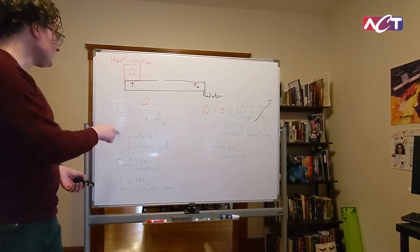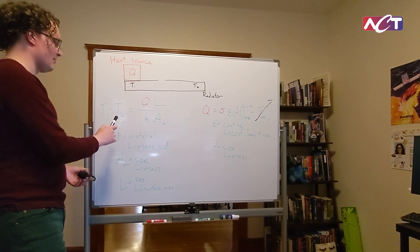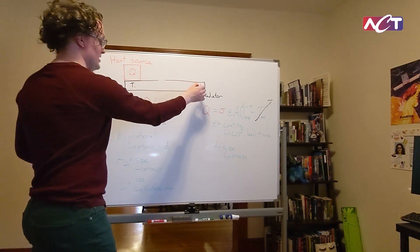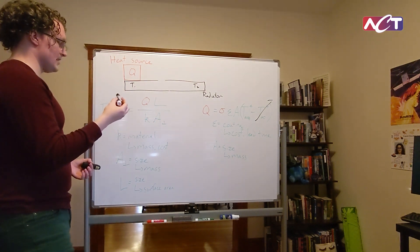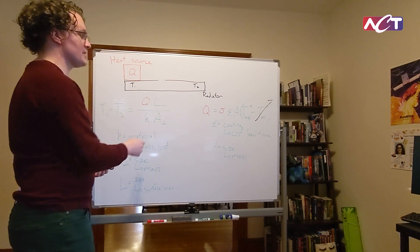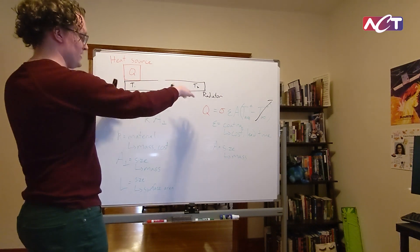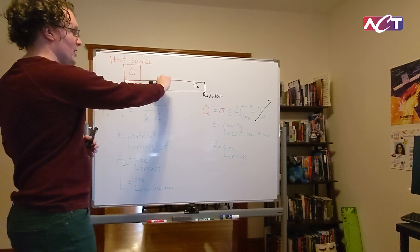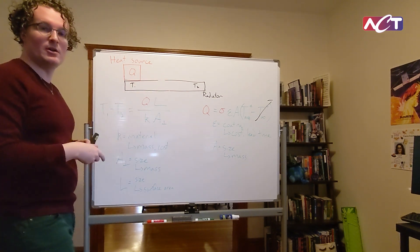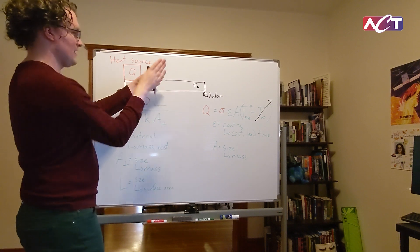The difference between the two temperatures is a function of the heat source, a function of the distance between the two points between T1 and T2, a function of the thermal conductivity of the material, and then a function of the cross-sectional area. This is not the surface area exposed to space anymore, it's now the cross-sectional area of this radiator in the direction of heat flow. So that's a function of the thickness and the depth into the whiteboard here of this radiator.